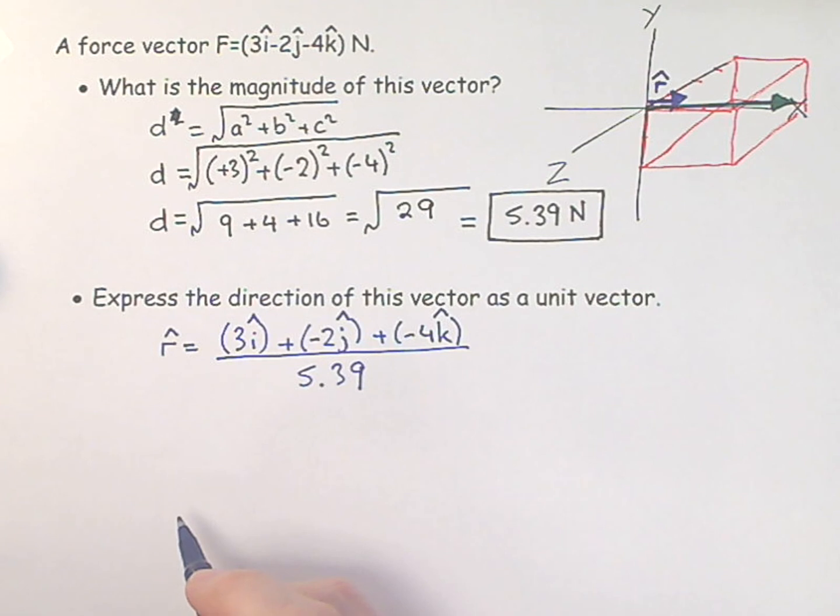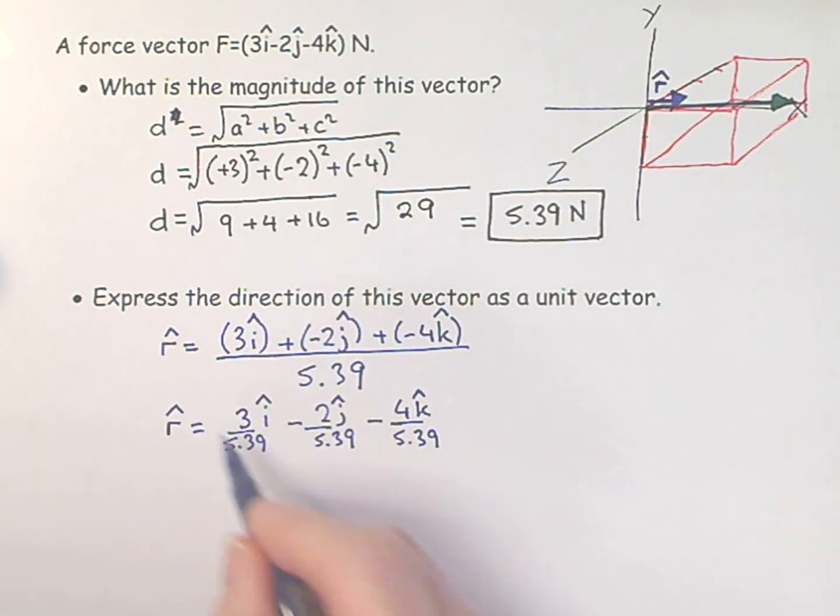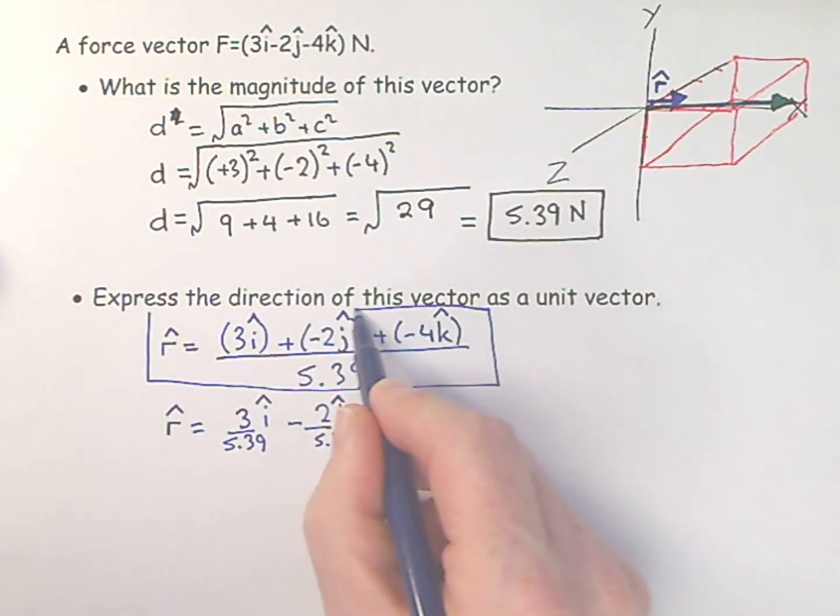Divide it by its own magnitude and we get the unit vector. We can go to a few more steps and say 3i over 5.39 minus 2j over 5.39 minus 4k over 5.39. But here, you know, I'm basically playing with the arithmetic. It's basically done. And from a teacher's point of view, actually, if I see that, I know that you know how to do it.